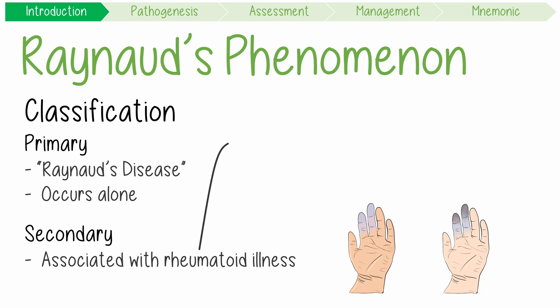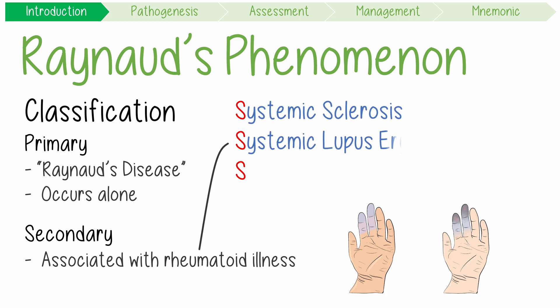Systemic illnesses causing secondary Raynaud's are sneaky, slimy syndromes starting with S: systemic sclerosis, systemic lupus erythematosus, and Sjogren's syndrome.